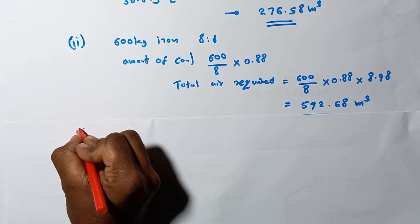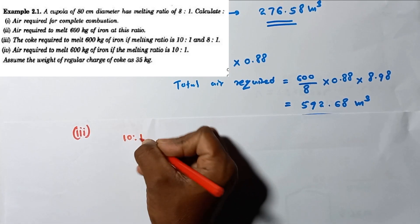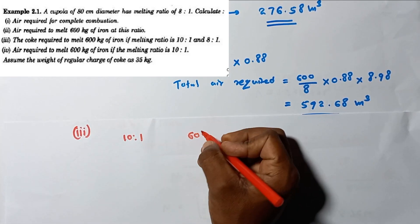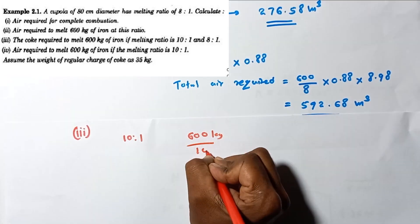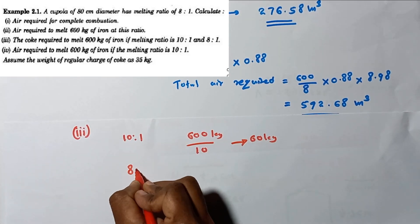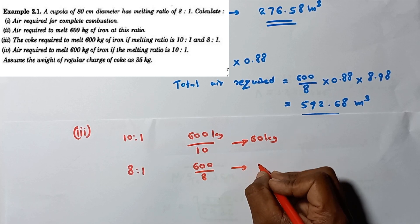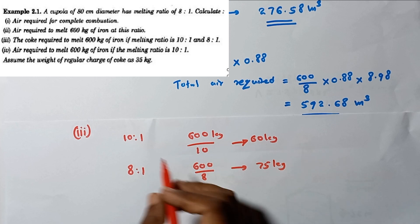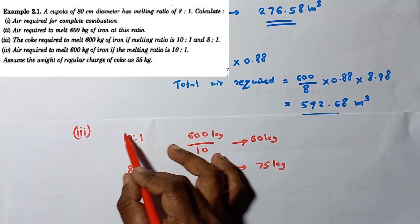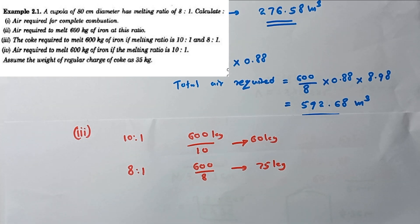For the third part — coal required to melt 600 kilograms of iron. At a 10 to 1 melting ratio, coal required = 600/10 = 60 kilograms. At the 8 to 1 ratio, coal required = 600/8 = 75 kilograms. So the cupola with a 10 to 1 ratio needs 60 kilograms of coal, while the 8 to 1 ratio needs 75 kilograms of coal to melt 600 kilograms of iron.